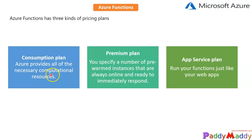There are three different pricing models. First is the Consumption-based plan, which provides the necessary computing resources all the time so you don't have to worry about managing resources — you're charged only for execution. The Premium plan is a reserved model where pre-warmed instances are always ready for you, and when you trigger the function it executes with additional computation resources when needed, at a slightly higher cost.